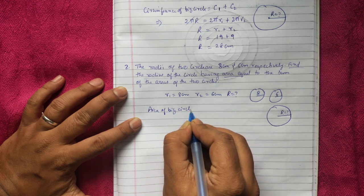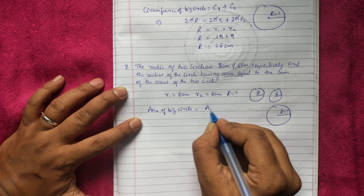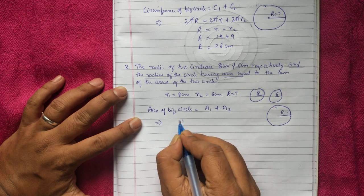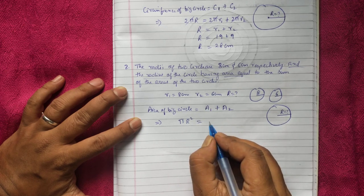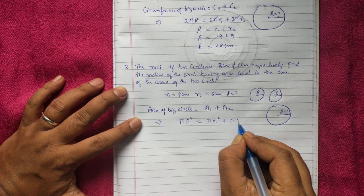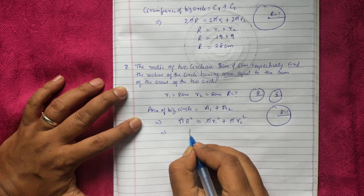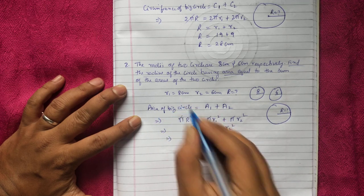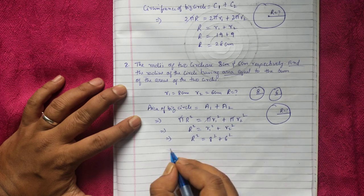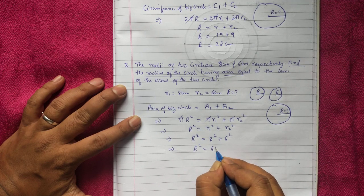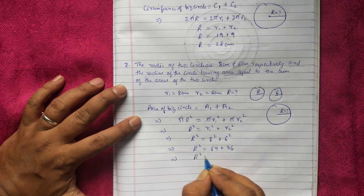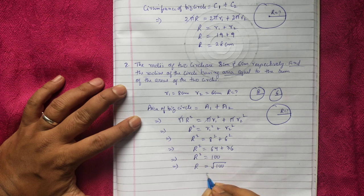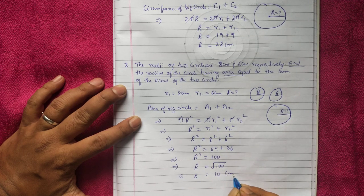The area formula for a circle is πR². So: area of big circle = area of first circle + area of second circle, which gives πR² = πR1² + πR2². We can cancel π throughout, leaving R² = R1² + R2². Putting in the values: R² = 8² + 6² = 64 + 36 = 100. Taking the square root: R = √100 = 10 cm. So the radius of the big circle is 10 centimeters.